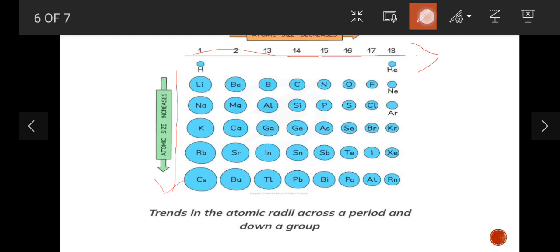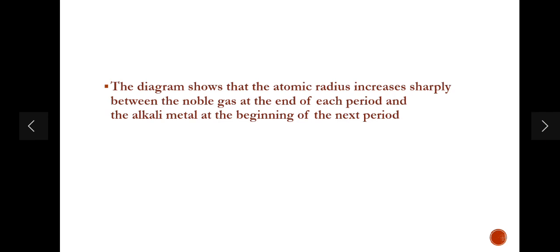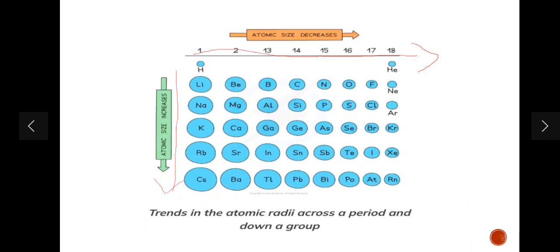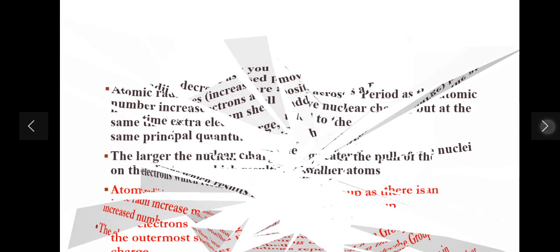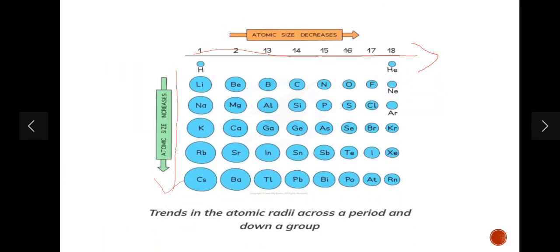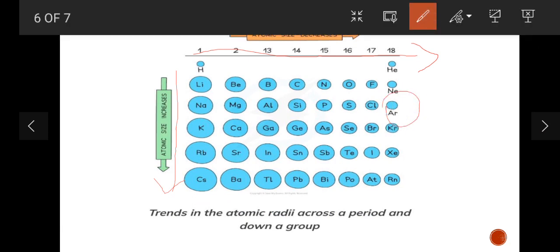Looking at this diagram, it shows that the atomic radius increases sharply between the noble gas at the end of each period and the alkali metal at the beginning of the next period. You can see here that this is the last element in this period — a noble gas — and this is the first element in the next period — an alkali metal. The diagram shows that the atomic radius sharply increases between the noble gas and the alkali metal.